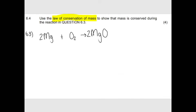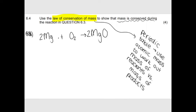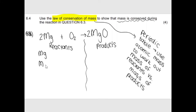Question 6.4 asks me to use the law of conservation of mass to show that mass is conserved during the reaction in 6.3. Using the law of conservation of mass means going to the periodic table, using the atomic mass numbers of each element, and working out the mass of the reactants on the left-hand side and the mass of the products on the right-hand side. If I get the same number, then the law of conservation of mass has been obeyed.